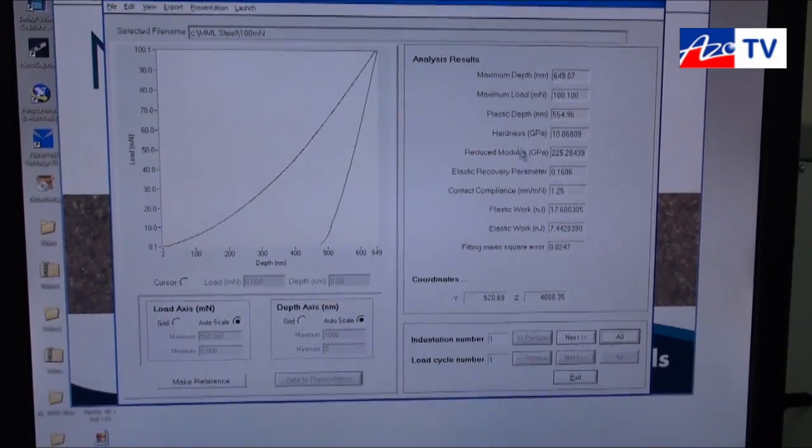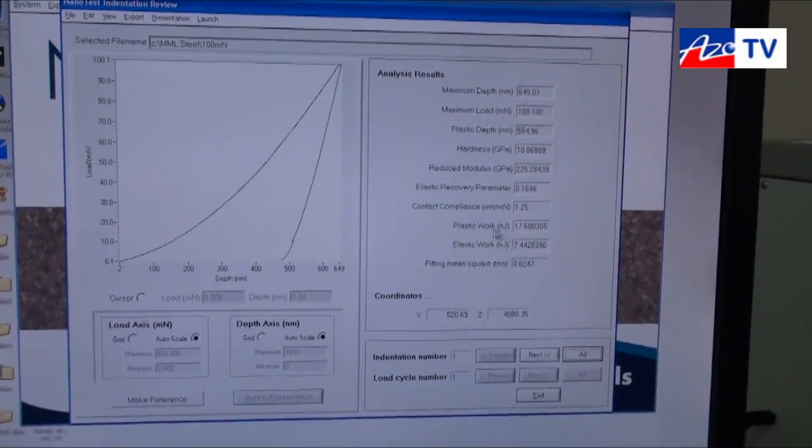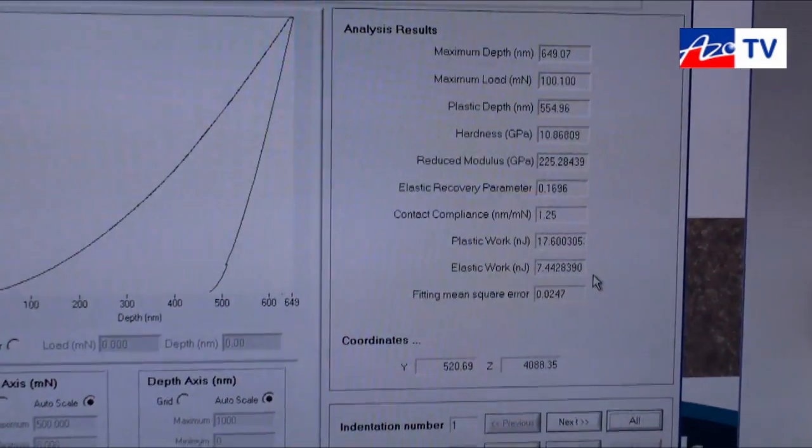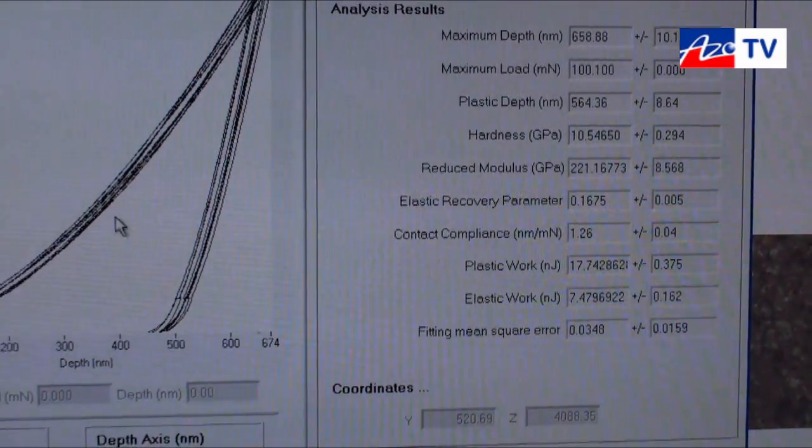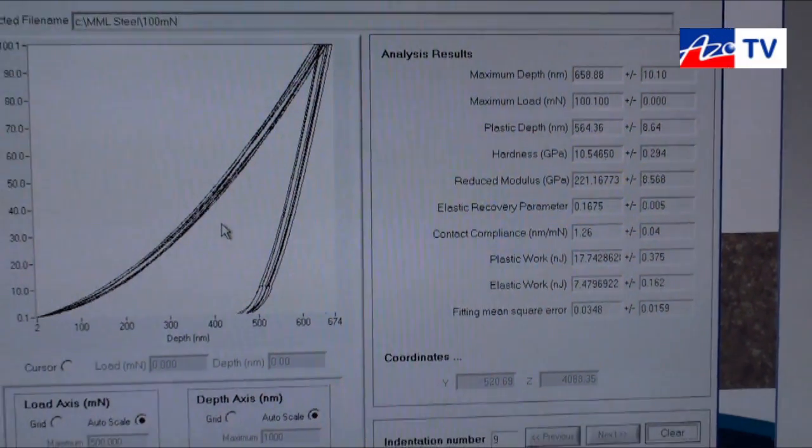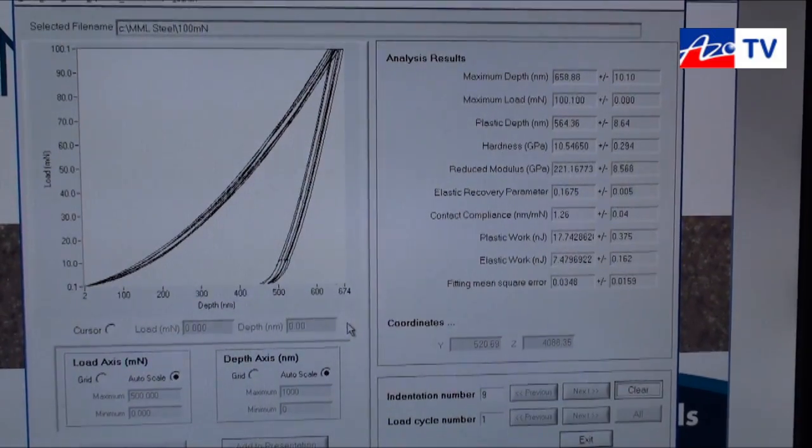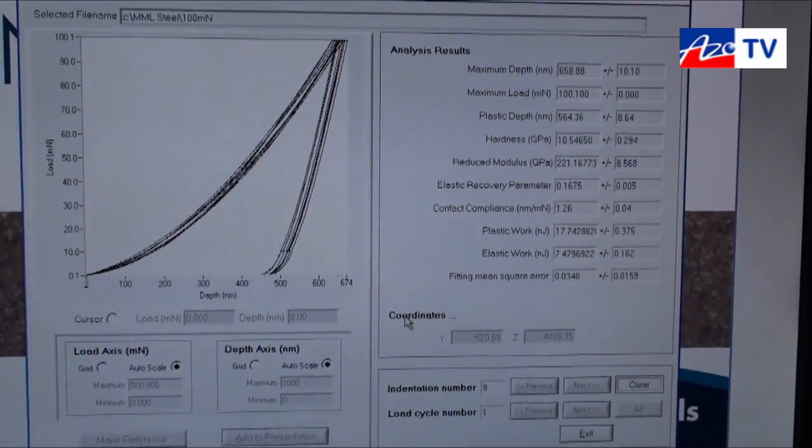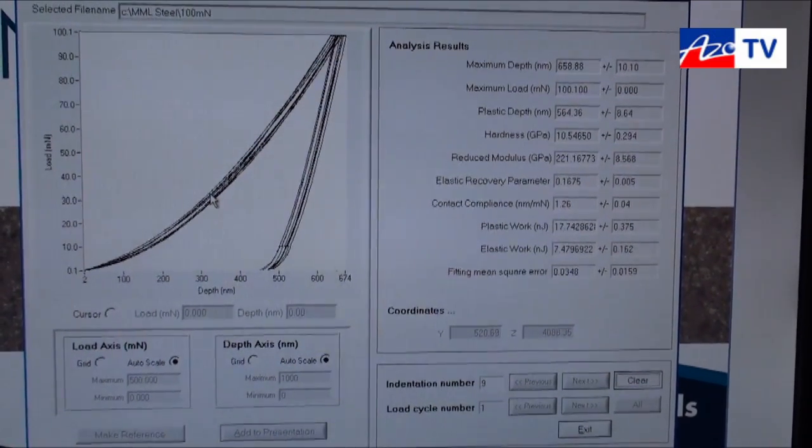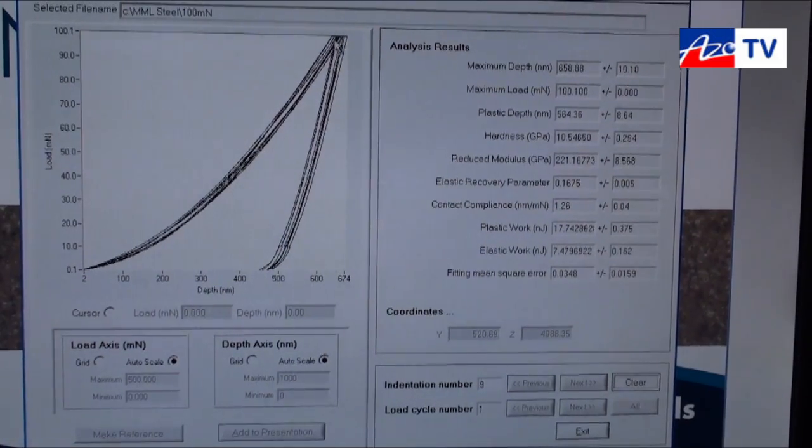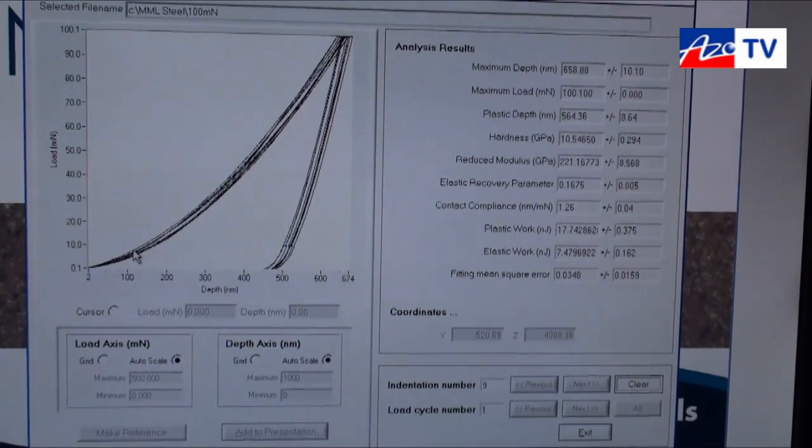We can analyze that data to look at things like hardness, elastic modulus, and then the plastic and elastic work done during the indentation. Typically people don't just do one indentation, so we do a set of indentations. In this case, because it's just a bulk sample, we're looking at the homogeneity of the properties across the sample surface. The results are pretty good, so we've got good grouping on the indentation results there. Any scatter is probably due to a bit of residual surface roughness on the steel sample.